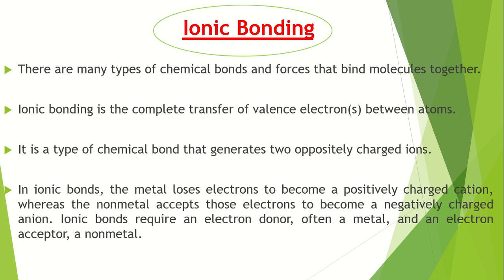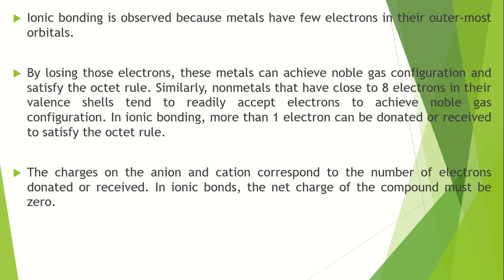In ionic bonds the metal loses electrons to become a positively charged cation, whereas the non-metal accepts those electrons to become a negatively charged anion. Ionic bonds are observed because metals have few electrons in their outermost shells. By losing those electrons, these metals can achieve noble gas configuration and satisfy the octet rule.